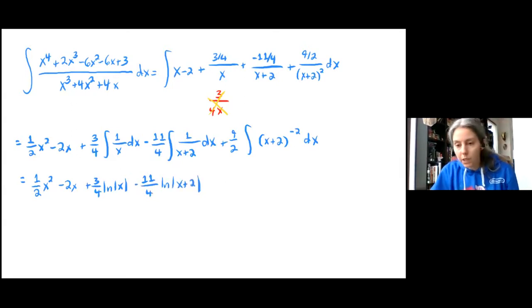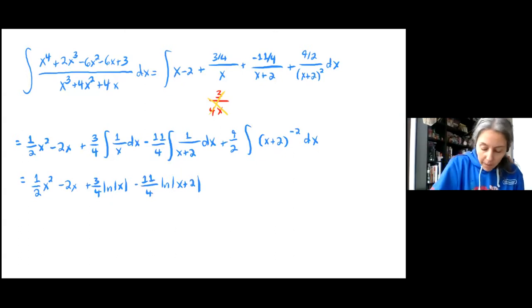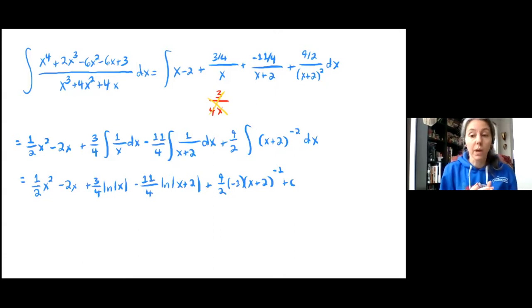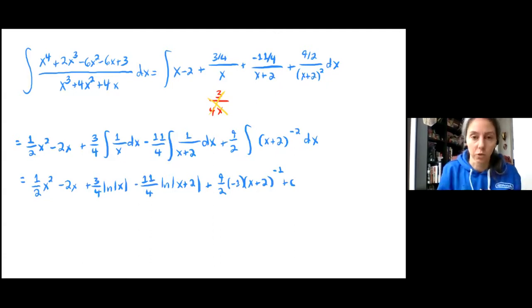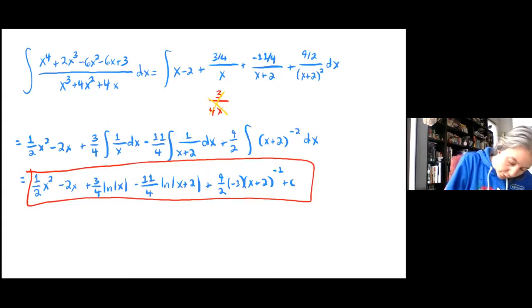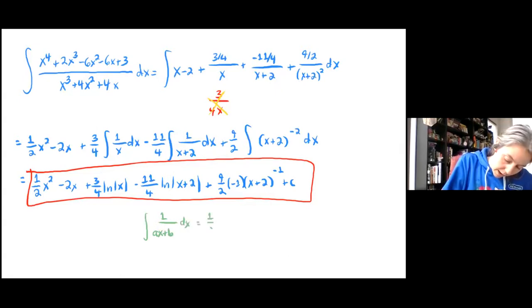Reminder — that's the known form we've been using a lot; I will write it down again in just a second. Plus (9/2) times (x plus 2) to the negative 1 times negative 1 plus a constant. The derivative of x plus 2 is just 1, so we can apply the known form directly without needing a substitution. So this is our final answer. Just to remind you, the known form is: the integral of 1 over (ax plus b) dx equals (1/a) ln|ax plus b| plus C.